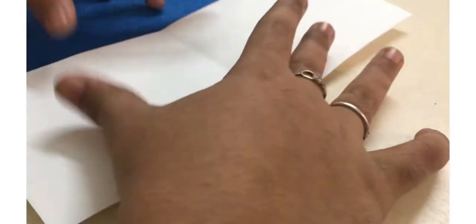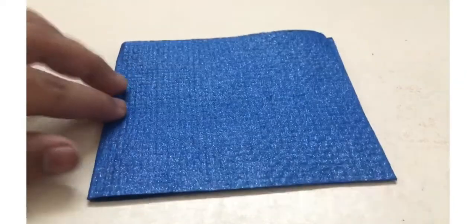Now fold the sheet in the middle. Crease it well. Now we will fold the glitter paper in the middle as we did for the sheets. Crease it well in the middle.